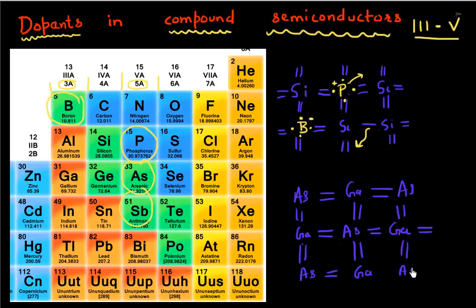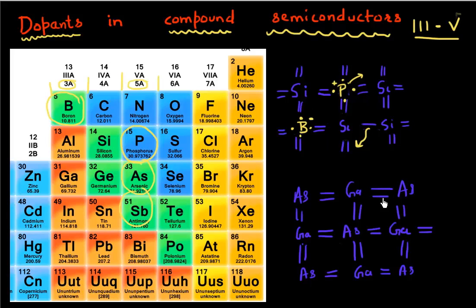In reality, these atoms form an FCC kind of lattice, arranged in a 3D fashion. So what should I replace this gallium or arsenic atom with to give me a donor — an extra electron — or give me a hole?